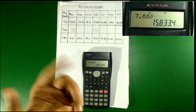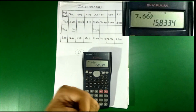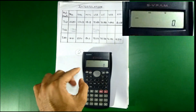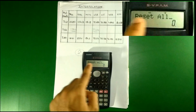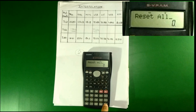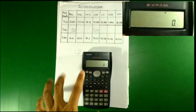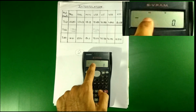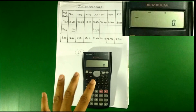Let's try it for one more question. To use the scientific calculator for another question, first press All Clear, then reset: press Shift, Mode, then 3 to select All, and press Equal. Now press All Clear again, then Mode, select 3 for REG, and 1 for Linear. You can see the REG symbol on the top again.